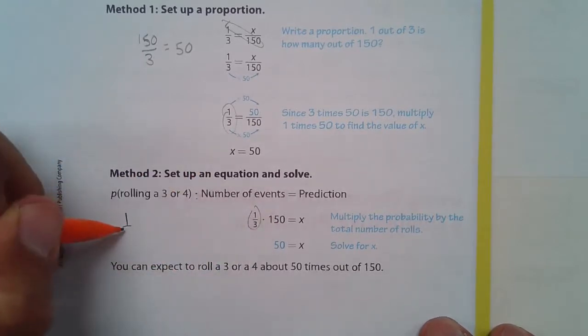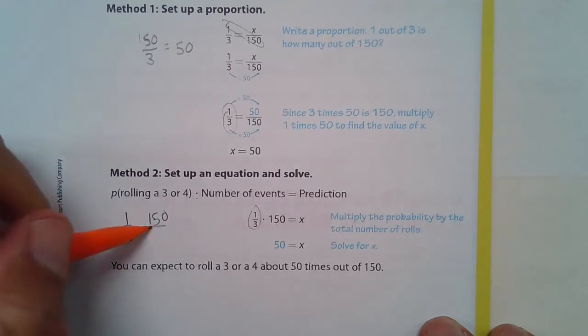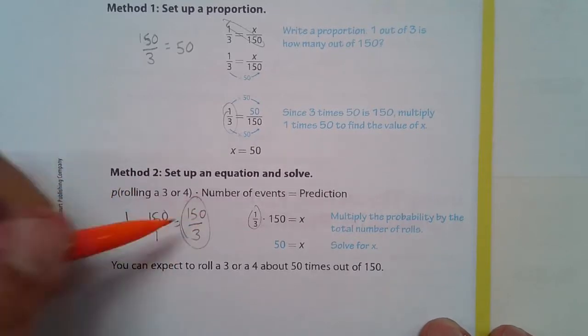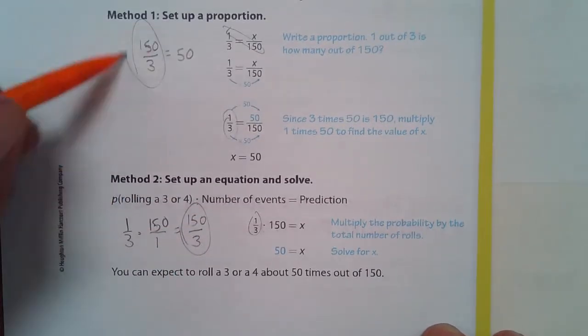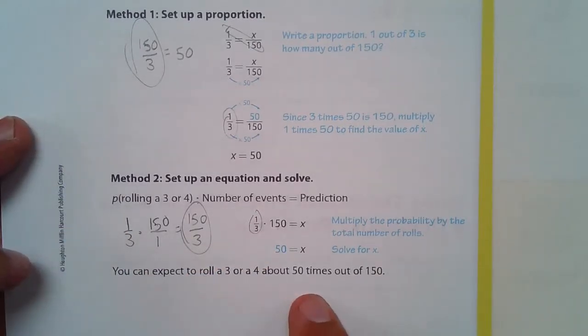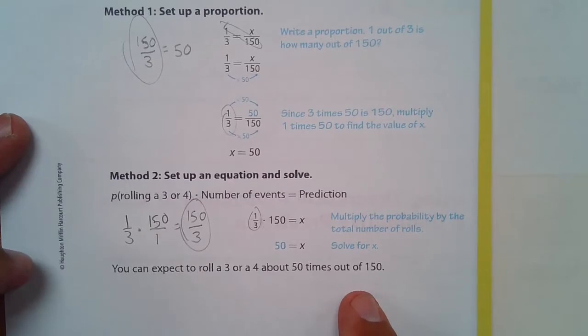And when you multiply one-third times 150, that's 150 over one. And then you multiply across. 150 times one is 150 and three times one is three. And here is that exact same thing that I showed you up above. You get 50. So you can expect to roll a three or four about 50 times out of 150 trials.